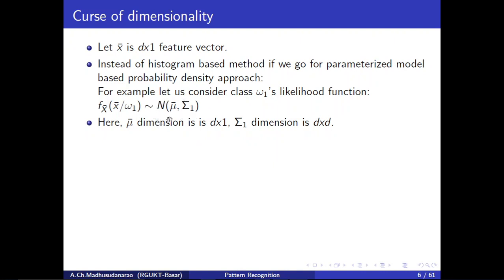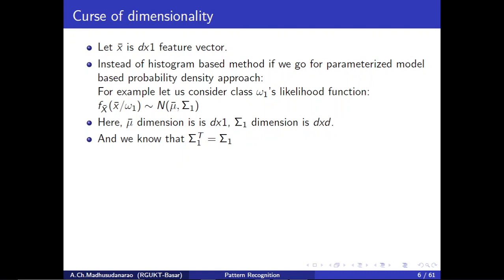This is the standard multivariate Gaussian distribution with mean vector μ̄ and covariance matrix Σ, where x̄ is a d×1 input feature vector. To estimate this PDF from training data, we only need to estimate the mean vector and covariance matrix — that is more than enough. The dimension of μ̄ is d×1 and Σ is d×d.